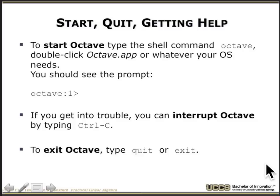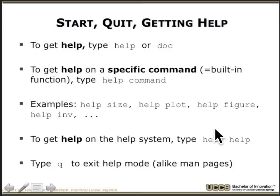To start Octave, type 'octave' at the shell prompt. You'll get a text prompt that says 'octave'. If you get into trouble, interrupt it with Ctrl+C or by typing 'quit' or 'exit'. Get help by typing 'help' or 'doc', followed by a command name — for example: 'help size', 'help plot', 'help inverse'. You can get help on the help system itself with 'help help'.